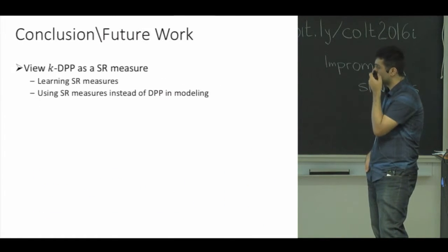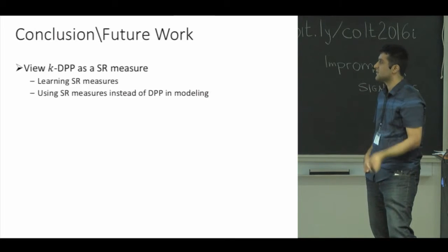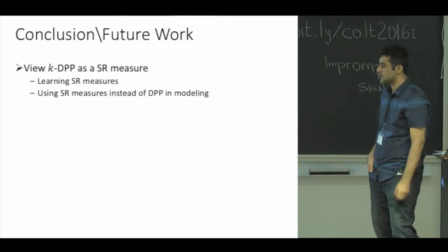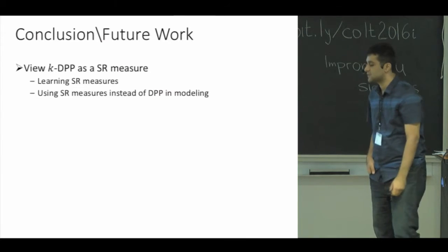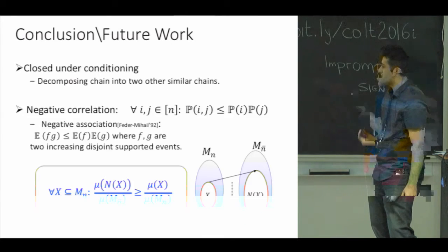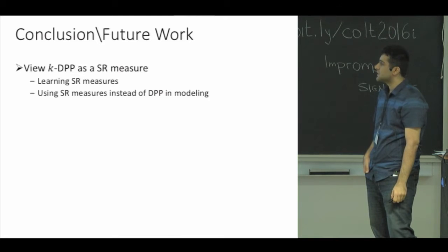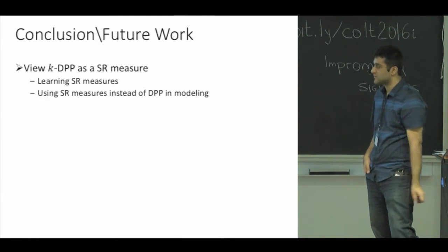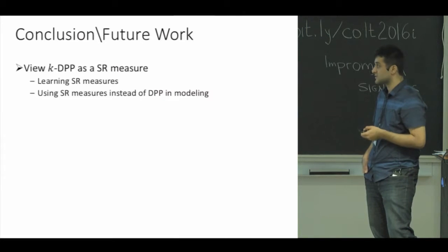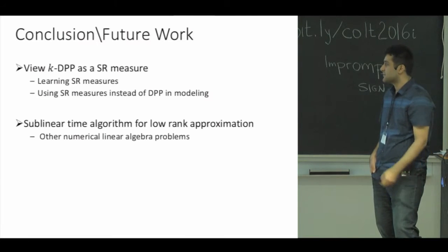Let me recap with some future work directions. We viewed k-DPPs as special cases of strongly Rayleigh distributions and designed efficient sampling algorithms for them. It would be nice to see if we can use SR measures directly instead of DPPs to model problems and probably get better models. In order to do that, we also need efficient algorithms for learning SR measures, which is another interesting question.